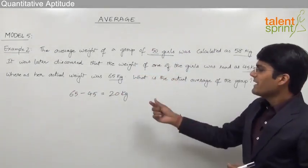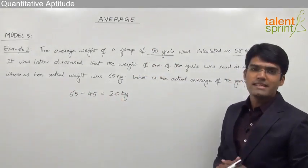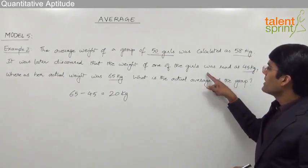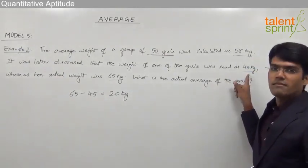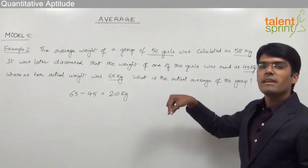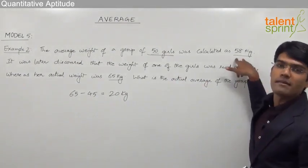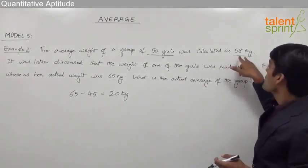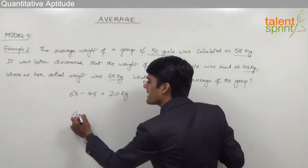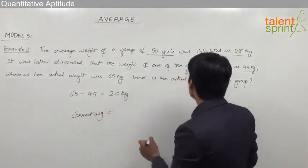The difference between the actual weight and the wrong weight is 20 kg. While calculating the average, the girl's weight was taken as 45 instead of 65, meaning her weight was reduced. That is why we got a reduced average. The actual average should be more than the wrong average.